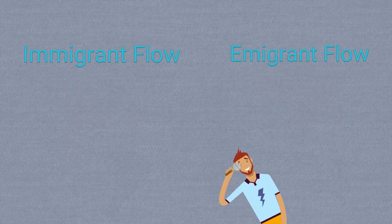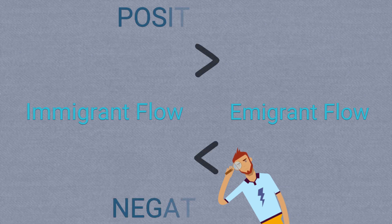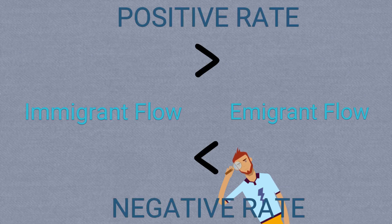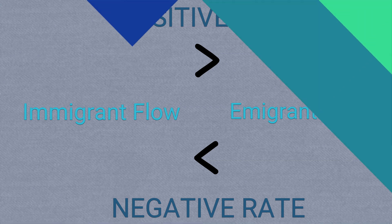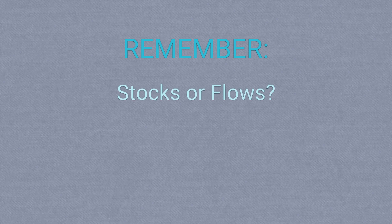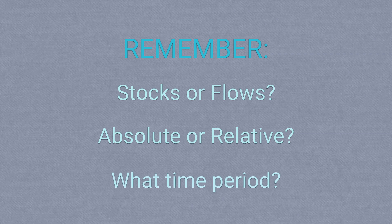Comparing these two values can inform a country about whether its net migration ratio is positive or negative. So the next time you're reading up on migration, be sure you understand whether you're reading about stocks or flows, if the measurements are absolute or relative, and what time period your data was collected within.